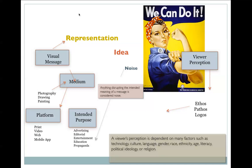Ethos is the credibility of the source. For instance, Rosie the Riveter was part of a large promotional campaign by the U.S. government during World War II to sell war bonds. Pathos — does it have an emotional appeal? Absolutely. It's a woman rolling up her sleeves, going to work for the country. And logos — does it make sense? Yes. Do the colors and the design make sense? Does the way she looks make sense? Yes. All of those things. If they didn't serve the intended purpose, we would call those things noise.